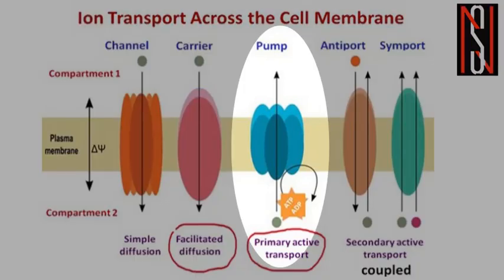There can also be a situation where ions have to go against the concentration gradient — from low concentration to high concentration — which is against the passive diffusion process. In this case, energy is required, so ATP is converted to ADP for the production of this energy. This is called primary active transport, because energy is required to pump these ions from low to high concentration gradient.